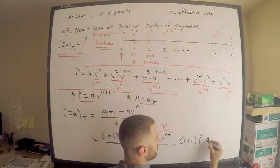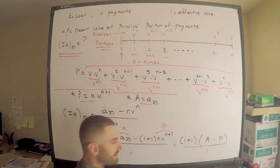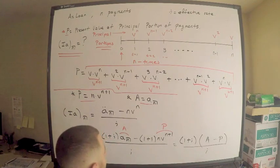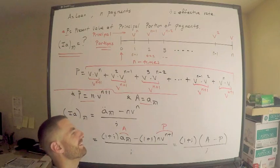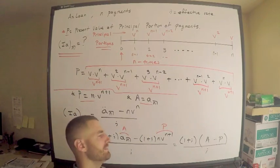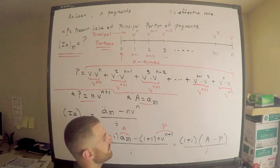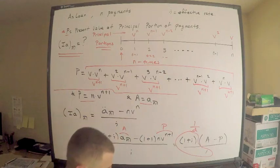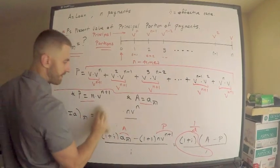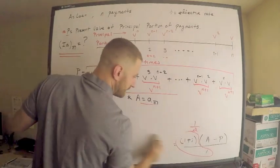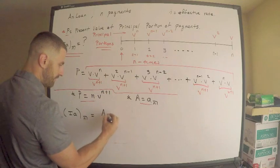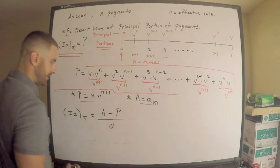This simplifies to (a − P) divided by i divided by (1+i), but since d = i / (1+i), we have i / (1+i) = d, which means 1/d = (1+i)/i. Therefore, in conclusion, the expression for the increasing annuity immediate equals (a − P) divided by d — the loan amount minus the present value of the principal portions, all divided by the effective discount rate d.